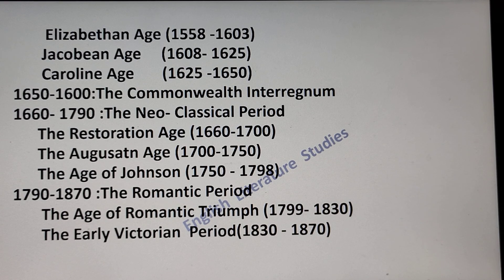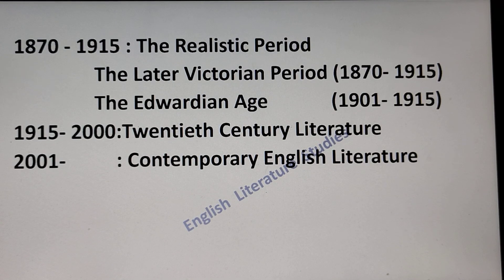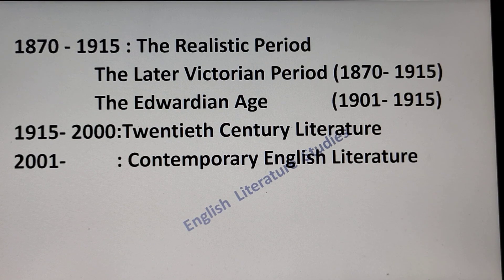Continuing the chronology: 1790 to 1870 — the Romantic period, which includes the age of Romantic triumph and the Early Victorian period; 1870 to 1915 — the Realistic period, which includes the later Victorian period and the Edwardian age; 1915 to 2000 — 20th century literature; and 2001 onwards — contemporary English literature, which will be the topic of my next video.